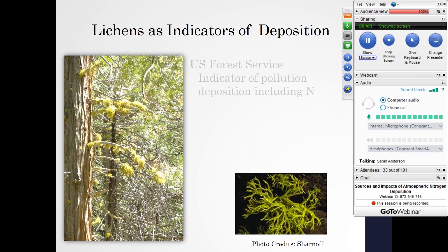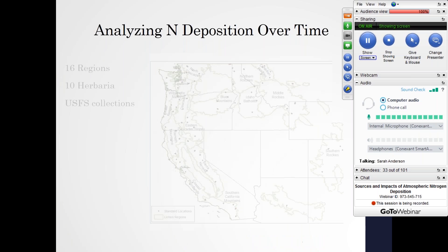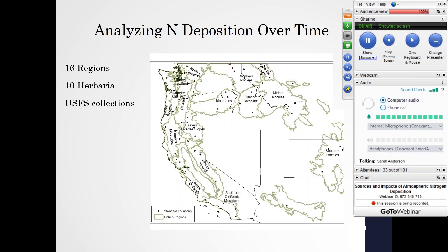To better understand nitrogen deposition coming from the atmosphere — the main way this extra nitrogen gets to really sensitive ecosystems — we can use lichens as a tool. The U.S. Forest Service has been using lichens as an indicator of nitrogen deposition and nitrogen pollution for a couple of decades now. Lichens are good indicators of deposition for two main reasons: they have a really poor ability to regulate uptake, so they end up acting more like sponges in the environment, really reflecting the conditions that they exist in. They are also very reliant, especially epiphytic lichens, on deposition as their primary source of nitrogen.